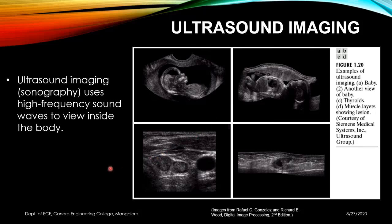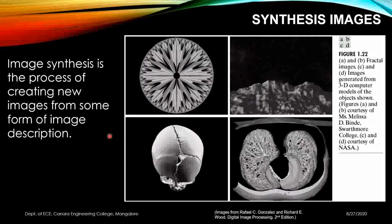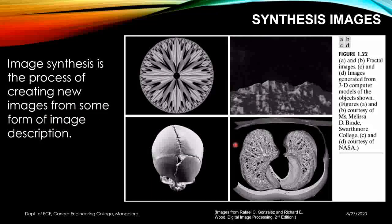Another type of image that can be created is a synthesis image, where an image is generated from some form of image description using mathematical equations for modeling. A simple example shows an image created out of circles. With more advanced mathematical modeling, any kind of image can be created.